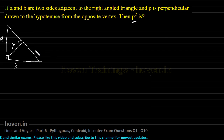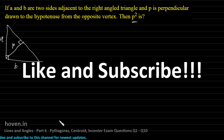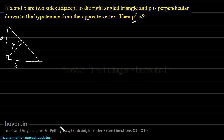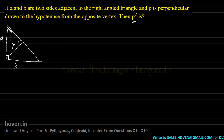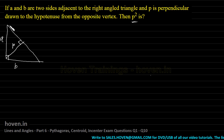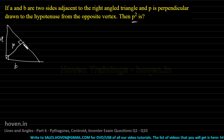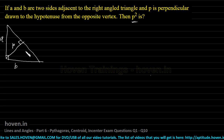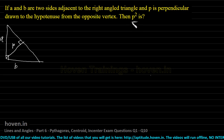This question can be done in a number of ways. Since this chapter is on Pythagoras, I will first solve it using the Pythagoras theorem — the solution will be a bit longer. But a shorter solution using trigonometry is also possible, which I will give after this. We can spot three right angle triangles in this figure, and we will apply the Pythagoras theorem to all of them, which will ultimately help us reach the value of P square.